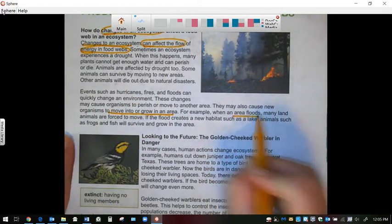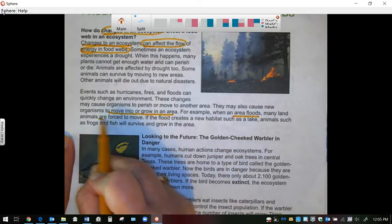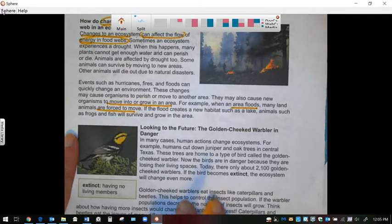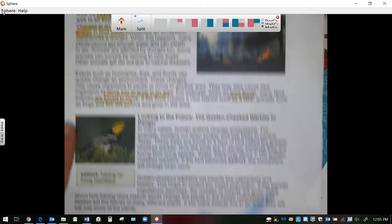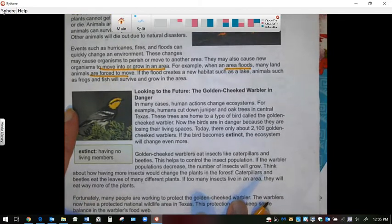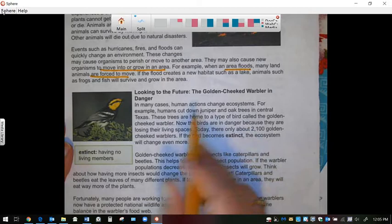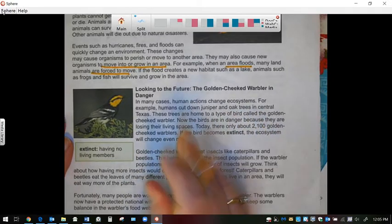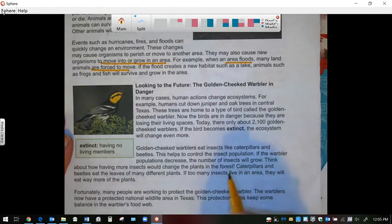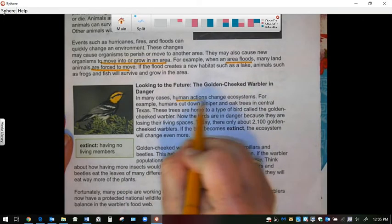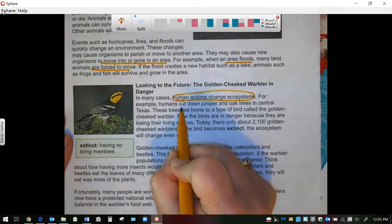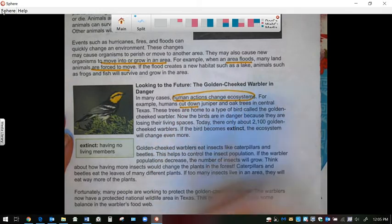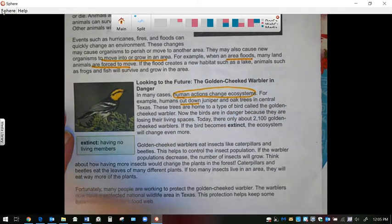For example, when an area floods, many land animals, they're forced to move. And sometimes they'll just go to another environment. So looking at the future of the golden-cheeked warbler, it's talking about how humans have changed this ecosystem, because they're cutting down the trees that that bird lives in. And it's making the bird extinct.